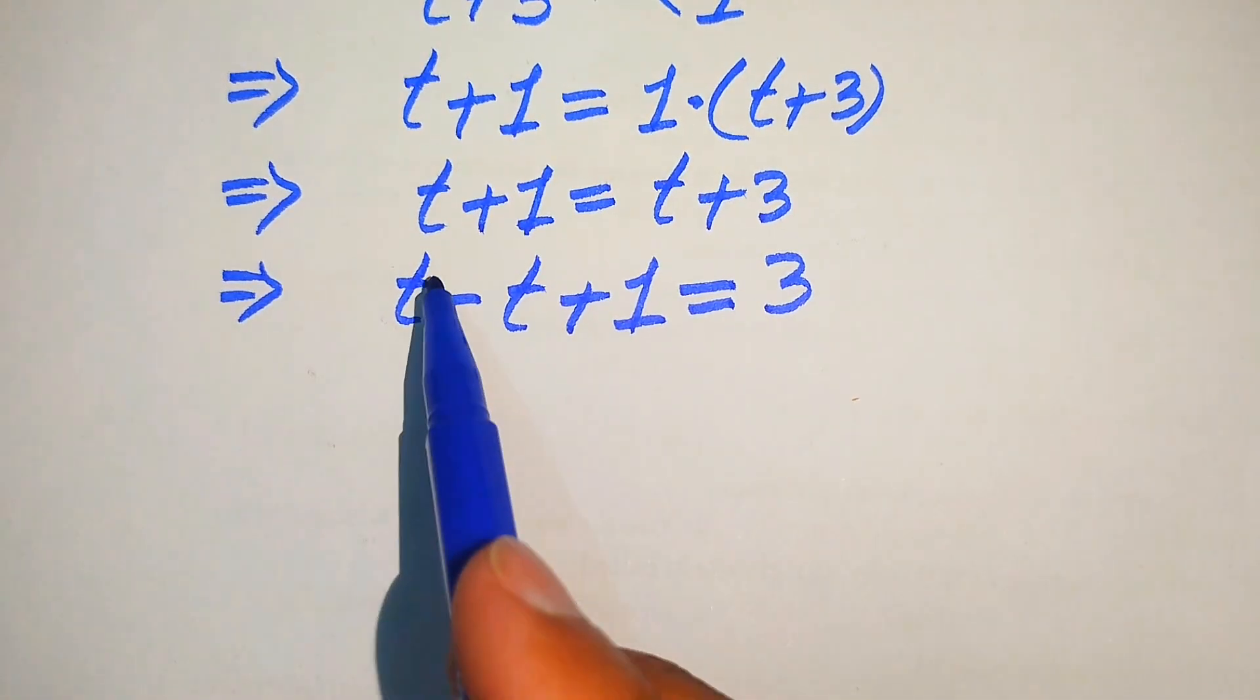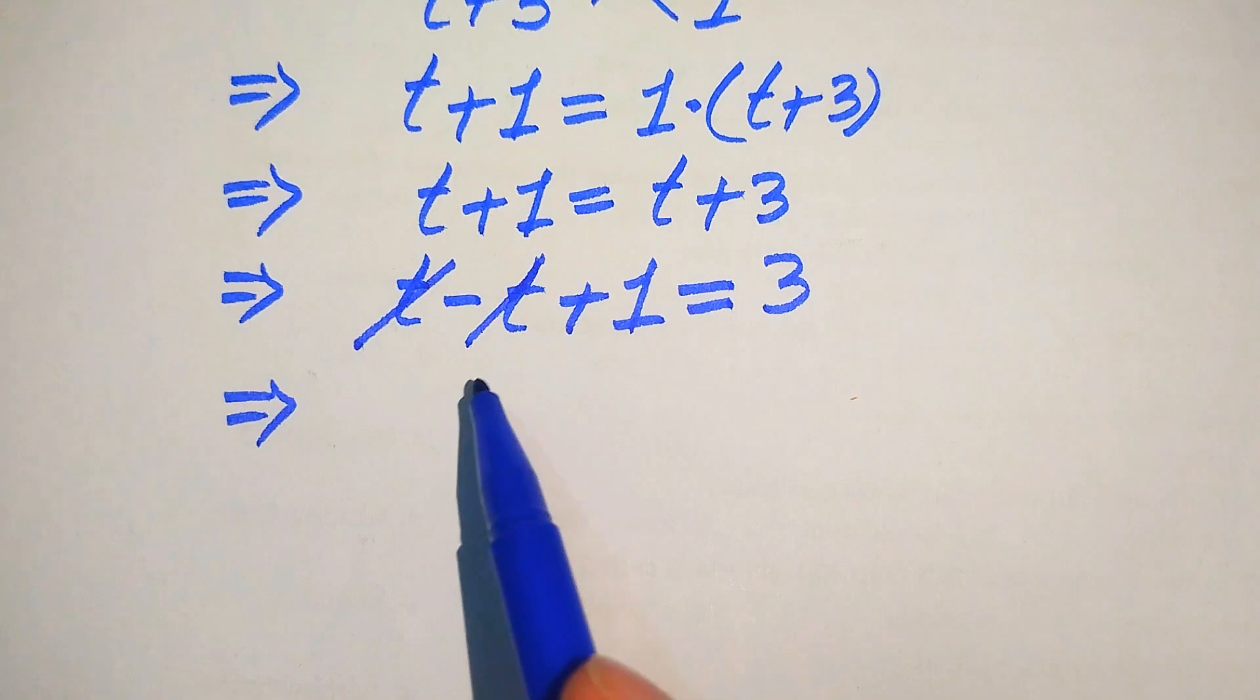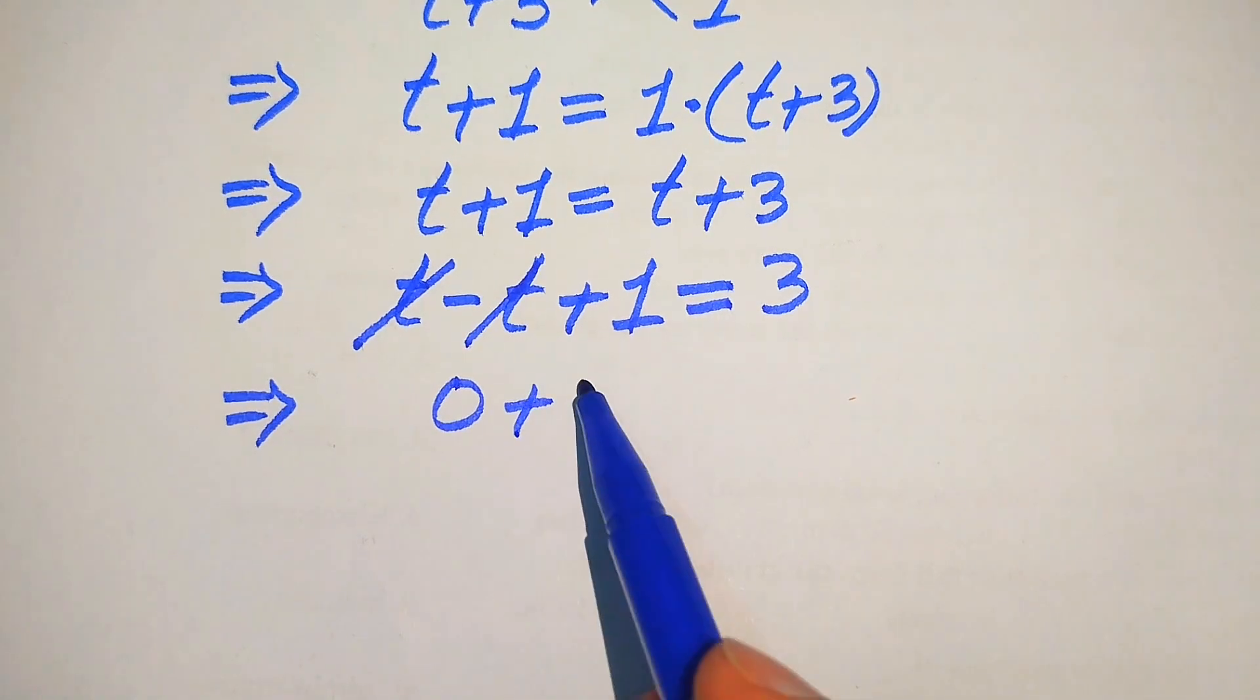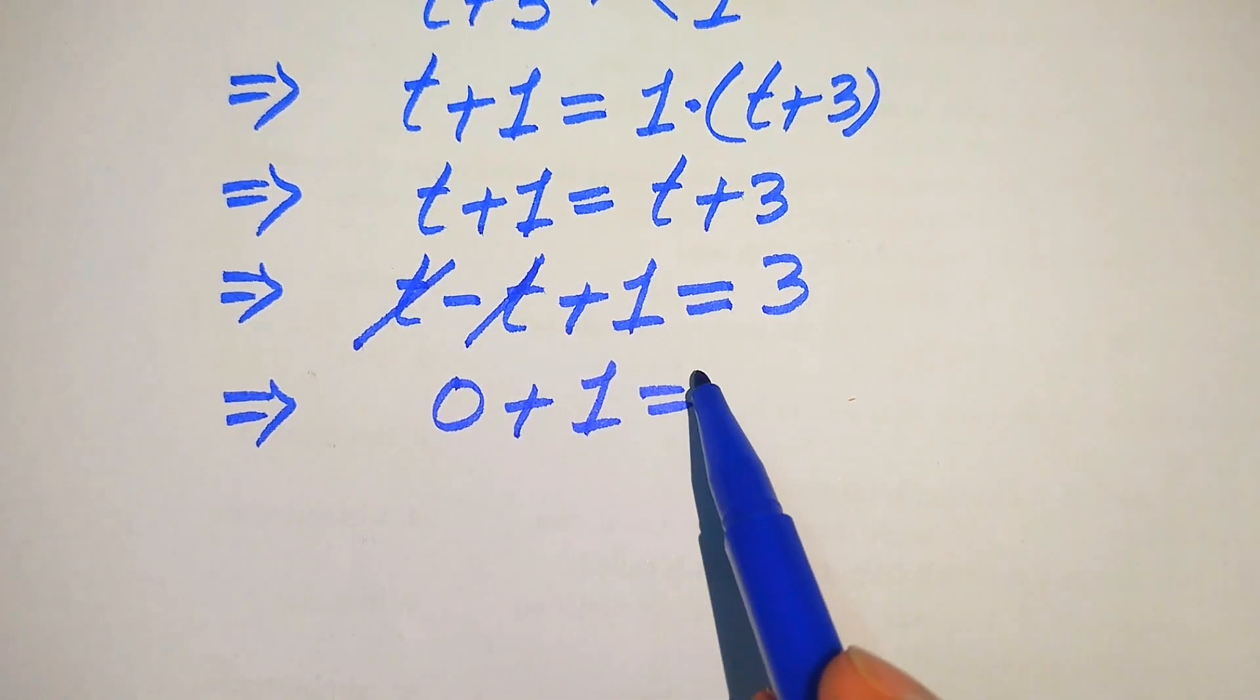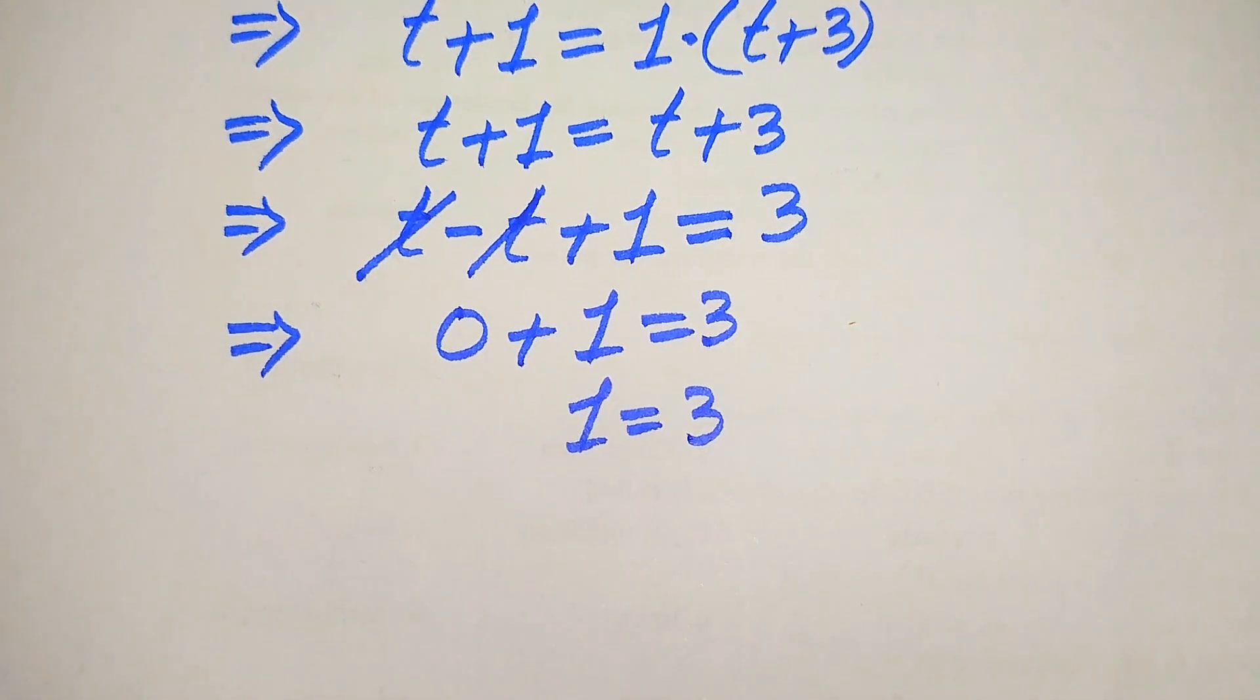And now you see here the positive t and negative t are cancelled out by each other, and we will get 0 plus 1 equals 3, and we get 1 equals 3.